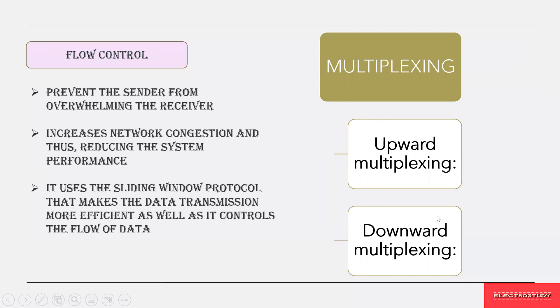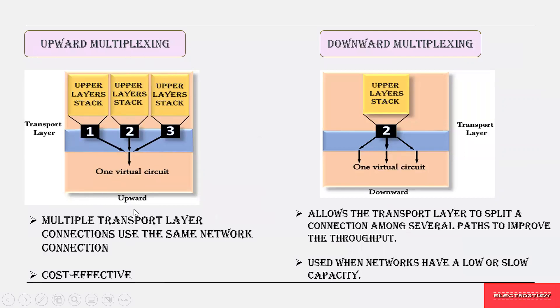Multiplexing is divided into upward multiplexing and downward multiplexing. In upward multiplexing, multiple transport layer connections use the same network connection — multiple connections share one virtual circuit, which is cost effective. In downward multiplexing, the transport layer splits the connection among several paths to improve throughput. This is used for networks that have low or slow capacity, so that the throughput of those slow or low-capacity networks can be improved.